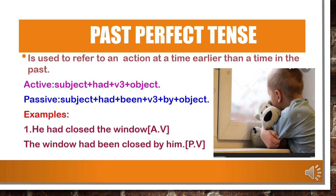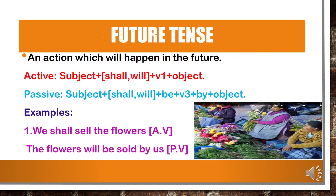Past perfect tense is used to refer to an action at a time earlier than a time in the past. In active voice: subject plus had plus V3 plus object. In passive voice: subject plus had plus been plus V3 plus by plus object. In past perfect tense, 'had' is used for all subjects. Example — in active voice: 'He had closed the window.' In passive voice: 'The window had been closed by him.' 'Had' is the helping verb, 'been' is written as it is, 'closed' is the V3 form. 'He' changes to 'him' as the object.